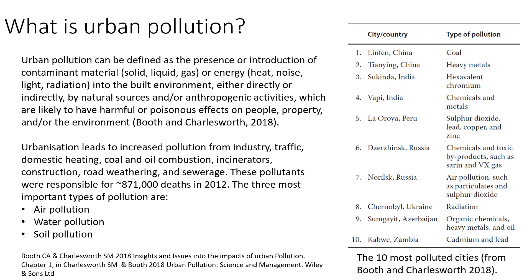On the right hand side you can see a table taken from that same chapter, which lists the top 10 polluted cities in the world — not a top 10 that you want to feature in. It also lists the type of pollution, and if you look down through this list you can see a large number of industrial contaminants: coal, heavy metals, chromium, and chemicals. Chernobyl in Ukraine features due to radiation from the nuclear leak from the power plant, but in general you can see a large number of toxic chemicals heavily linked to industry in urban areas.